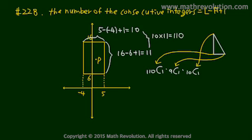So how many combinations, how many different triangles can we construct? 110 times 9 times 10 equals 9900. So our answer is choice C.